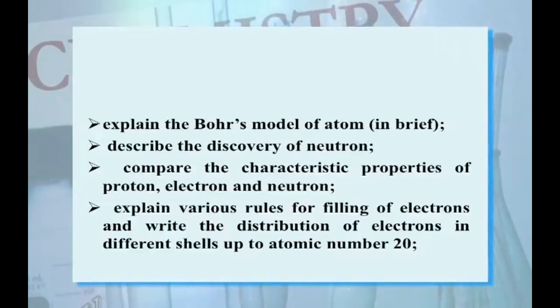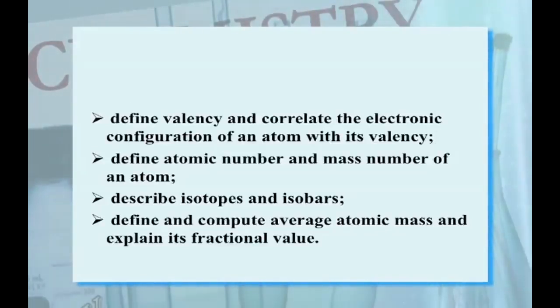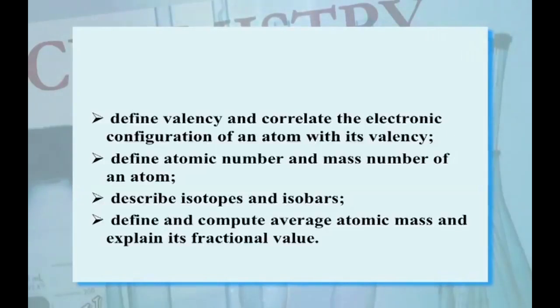You will be able to describe the discovery of neutron and compare the characteristic properties of proton, electrons, and neutrons. You will explain various rules for filling of electrons and write the distribution of electrons in different shells up to atomic number 20. You will define valency and correlate electronic configuration of an atom with its valency. Define atomic number and mass number of an atom, describe isotopes and isobars, and define and compute average atomic mass and explain its fractional value.